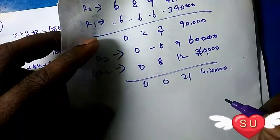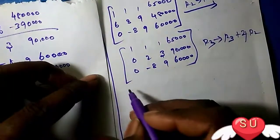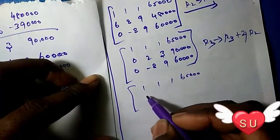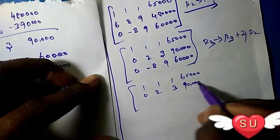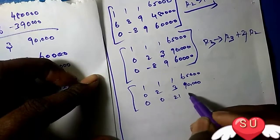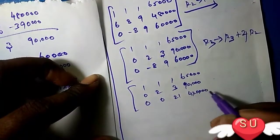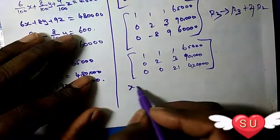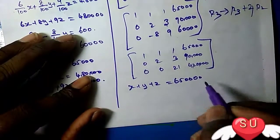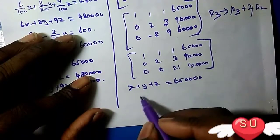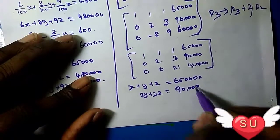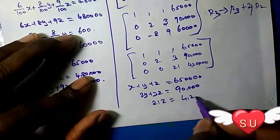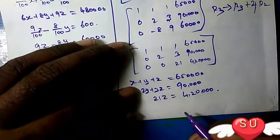So we have: 1, 1, 1, 65,000. Next, 0, 2, 3, 90,000. And 0, 0, 21, 420,000. This gives us X plus Y plus Z equals 65,000, 2Y plus 3Z equals 90,000, and 21Z equals 420,000.